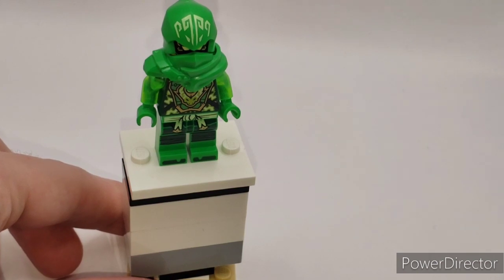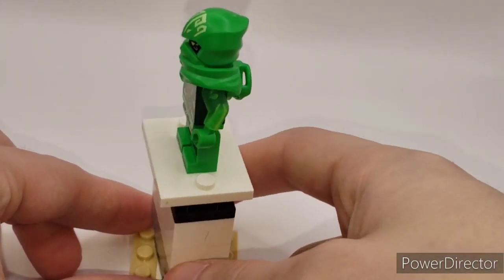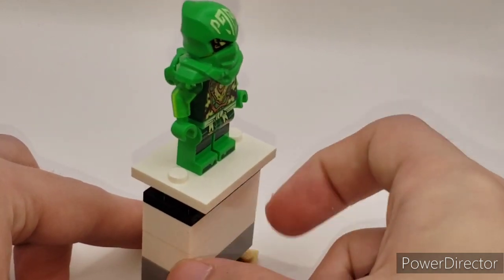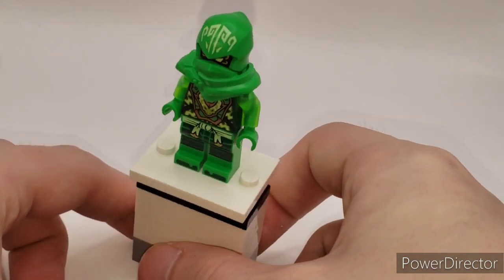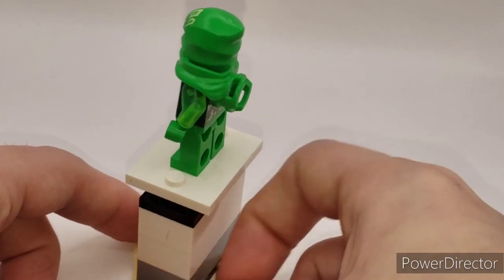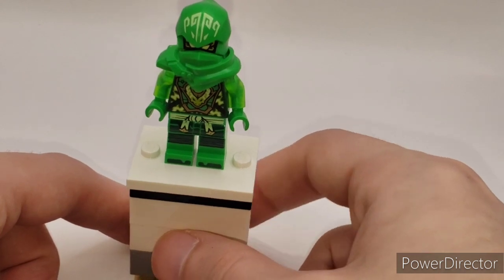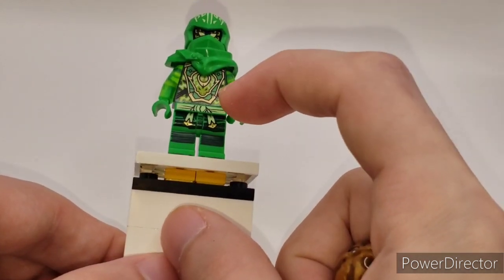Alright, so starting off with Lloyd. As you can see here, everything on him is the exact same, except for the torso from his average Dragon's Rising sets. Head print continues the same, except for the hood piece. You do have very nice printing right here.